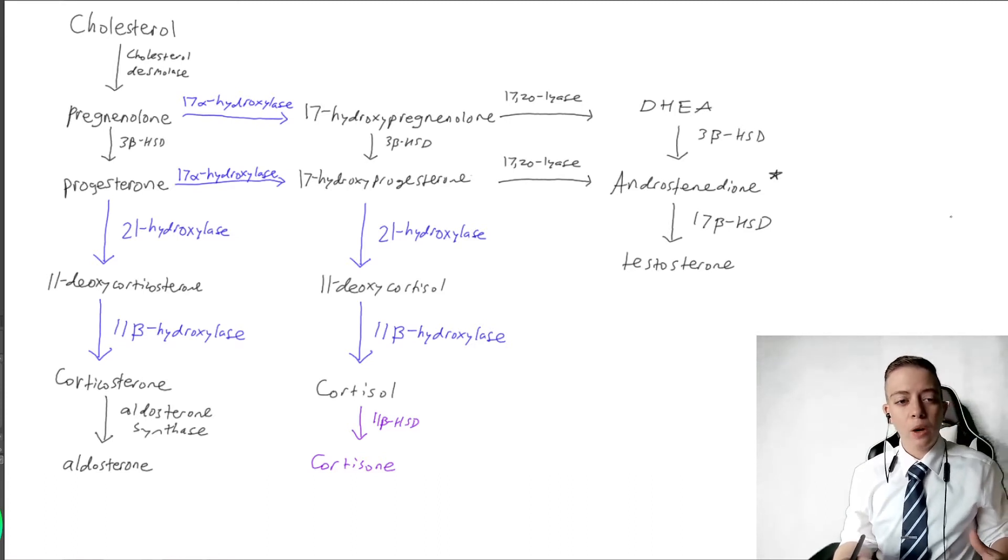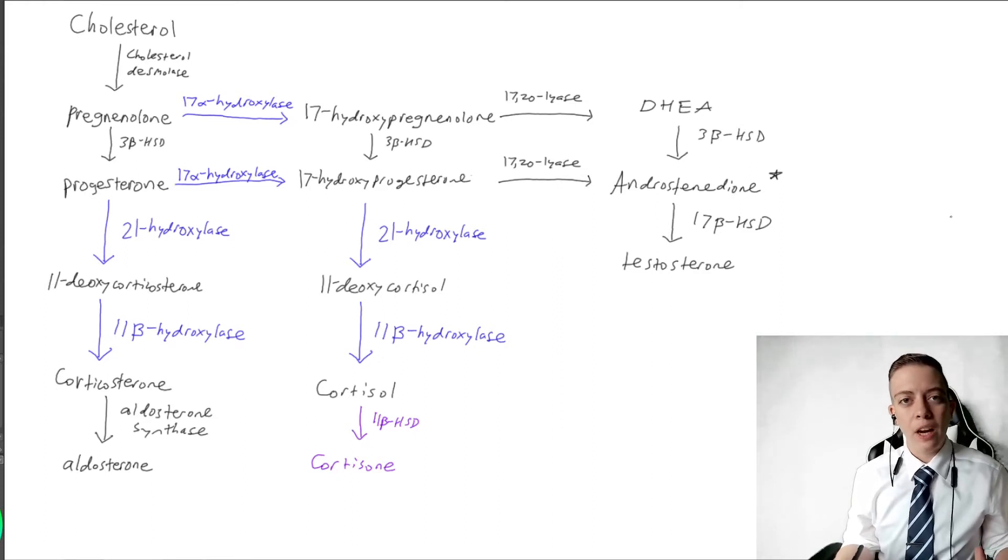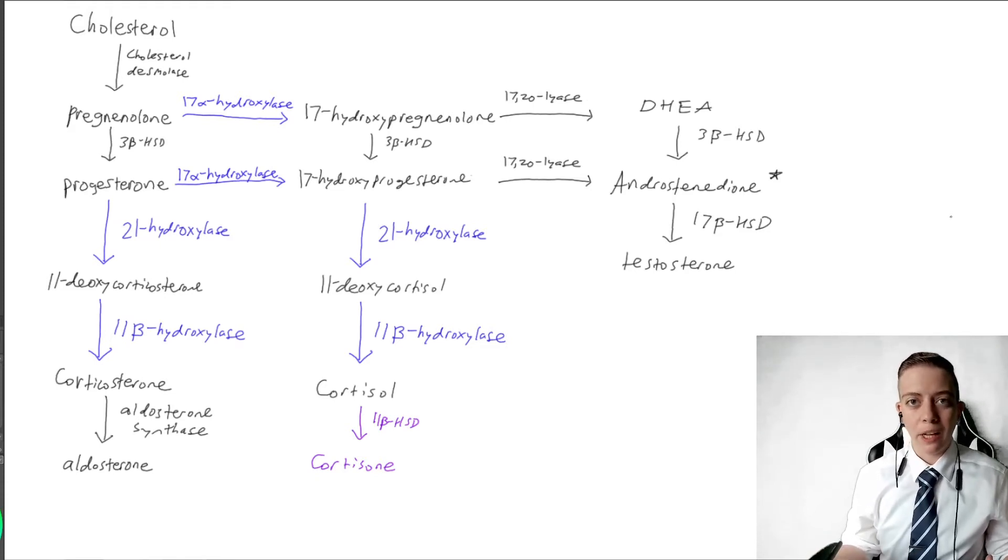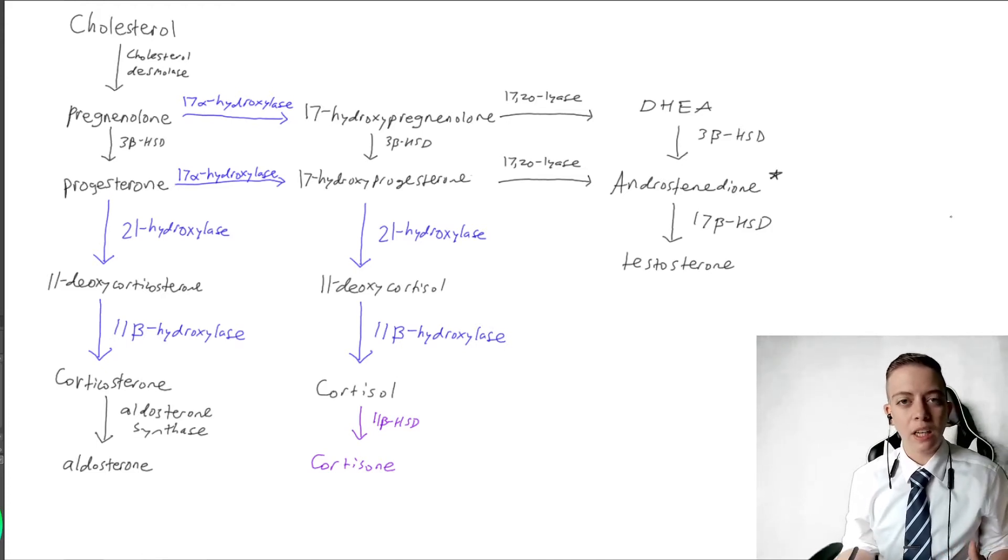So today we're going to be edging into a phenomenon called congenital adrenal hyperplasia. That is when an enzyme in the adrenal cortex is no longer functional. I'll explain later on exactly how congenital adrenal hyperplasia affects someone at a macroscopic level. Today we're going to focus on one specific enzyme at this biochemical level, specifically 21-hydroxylase, and we're going to see how this affects somebody.